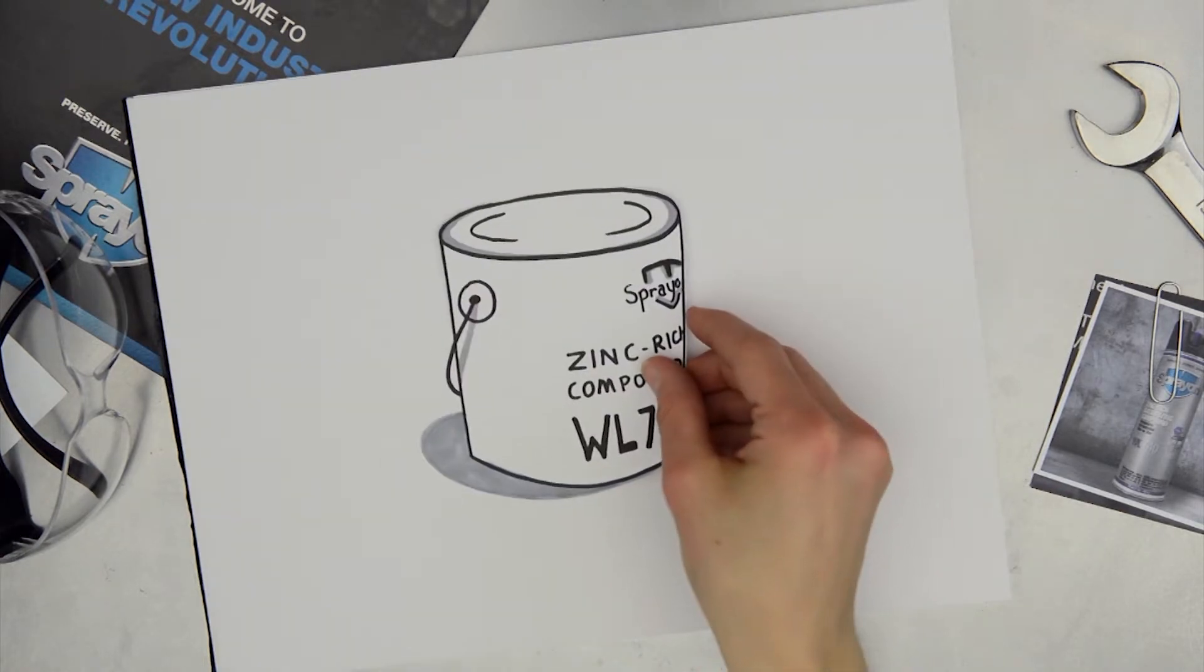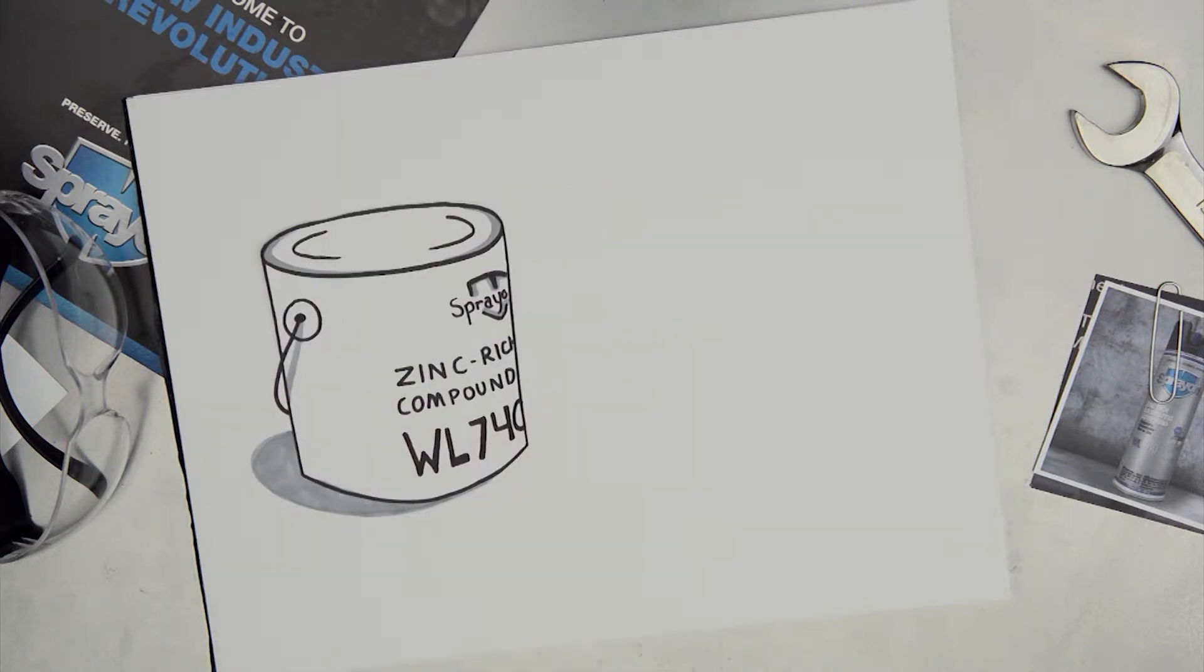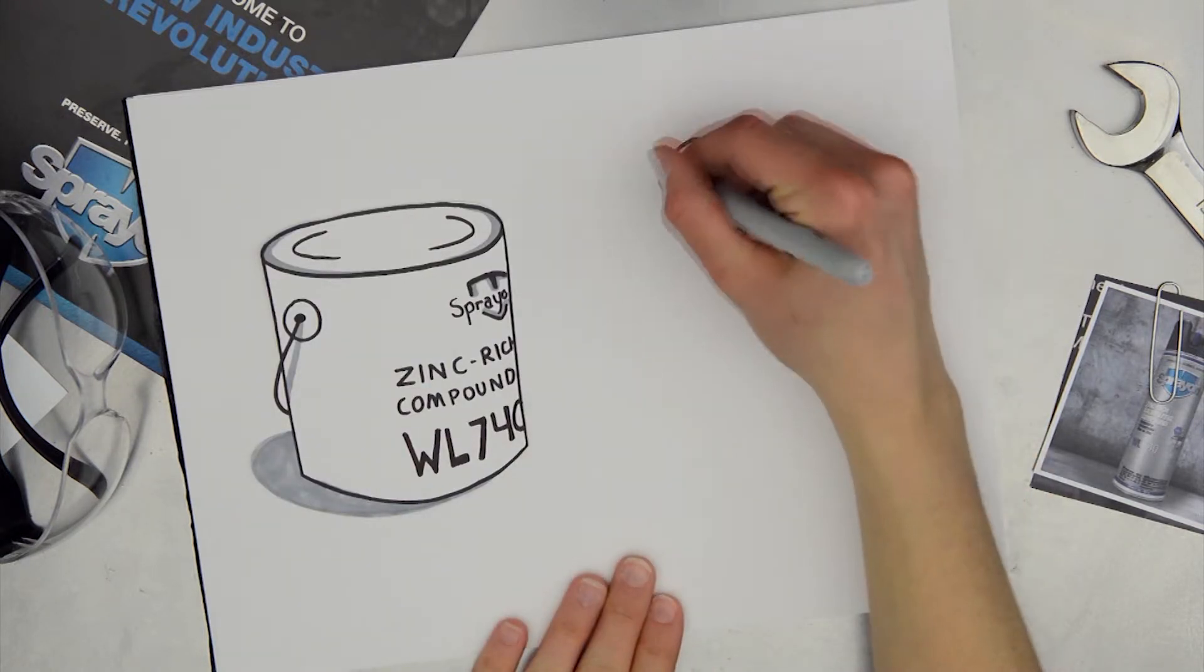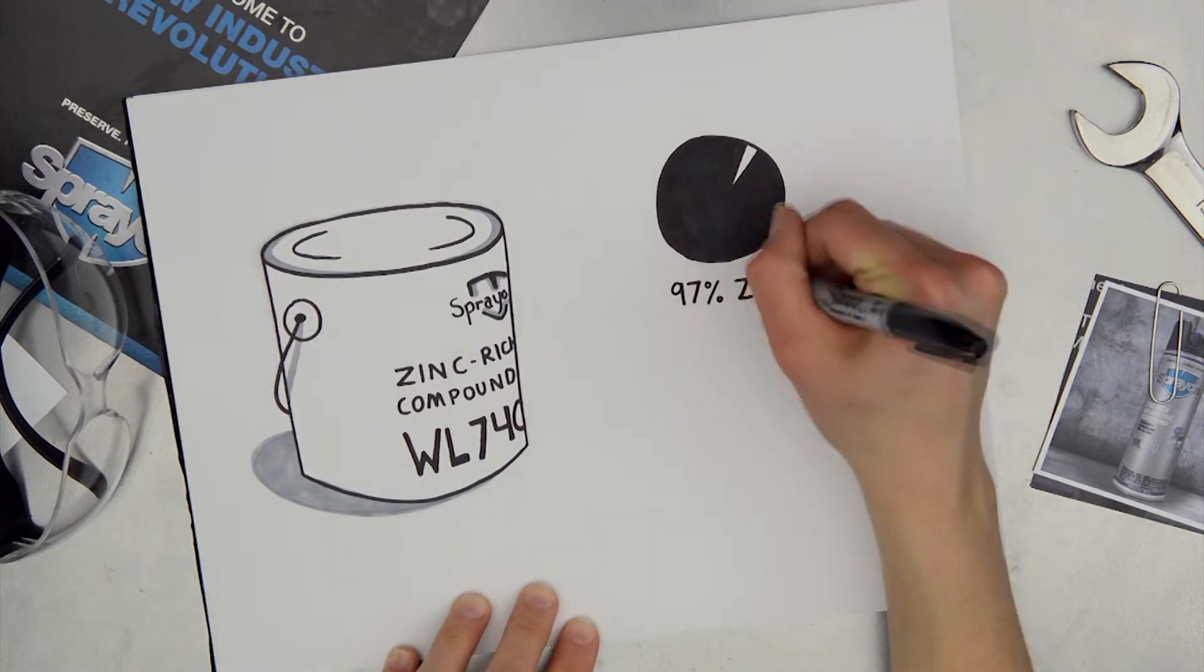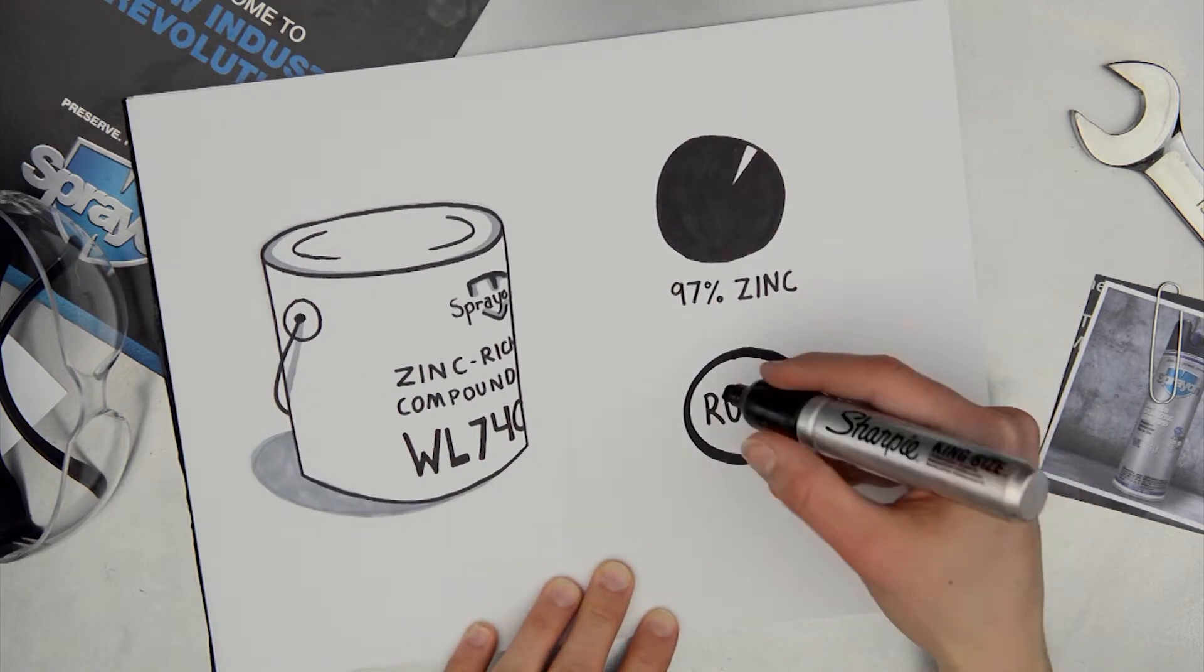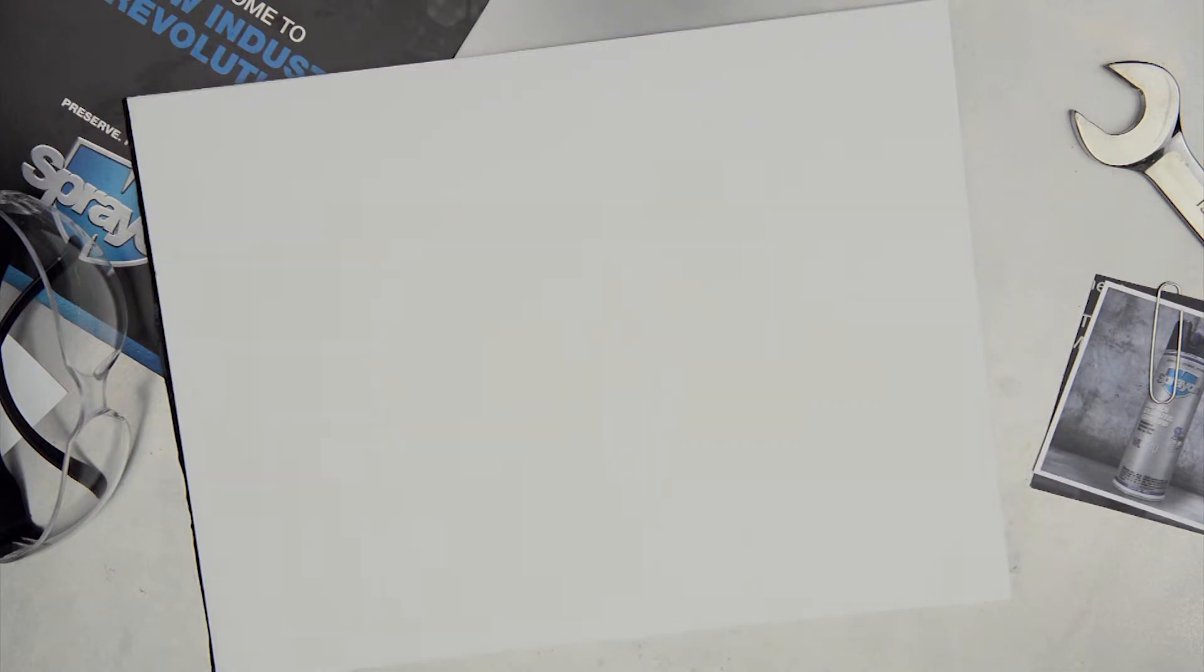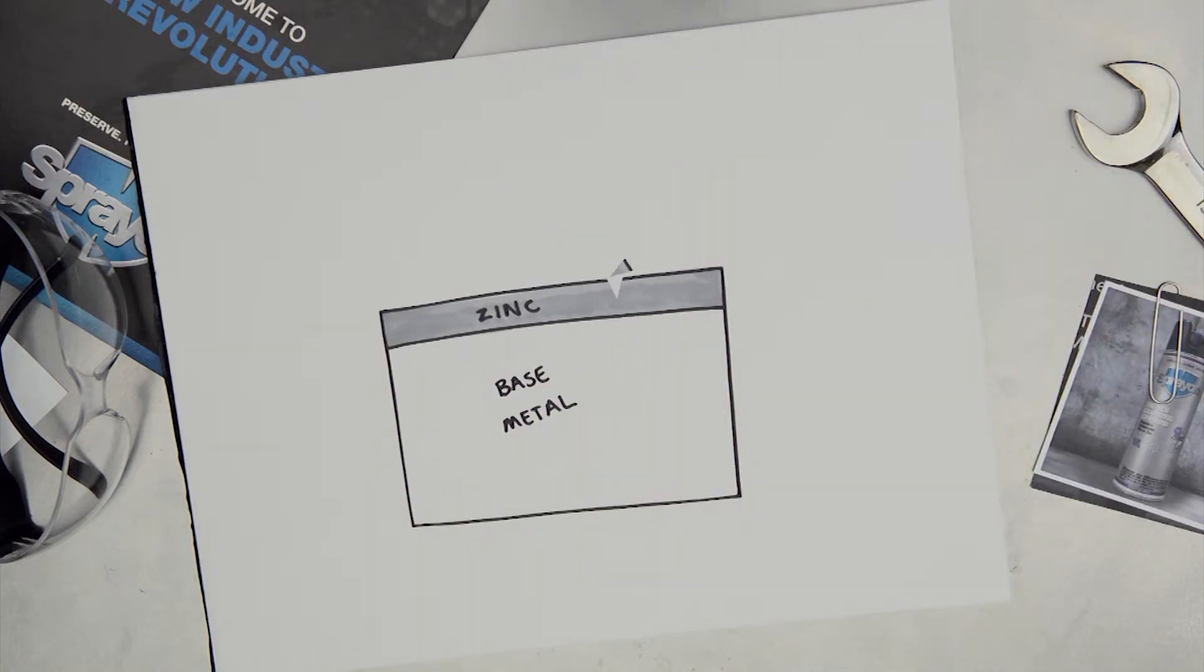That's where WL740 Zinc Rich Galvanizing Compound comes in. WL740 is a high-performance primer containing 97% pure zinc dust pigment, blended with epoxy resins that stop rust by electrochemical action on steel or galvanized coatings. The self-sacrificing zinc protects the base metal, preserving strength and preventing rust creepage when the area is penetrated or scratched.